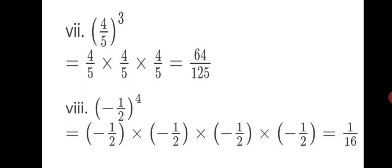Last sum, the 8th: (−1/2) raised to the power of 4. Minus 1 upon 2 is multiplied by itself 4 times. When a negative number is multiplied 4 times, you get a positive answer. 1 into 1 into 1 into 1 is 1. 2 twos are 4, 4 twos are 8, 8 twos are 16. Final answer: 1 upon 16. I hope you have understood Practice Set 26 well. Do practice the sums in your notebook. Stay safe, keep learning, and thank you.